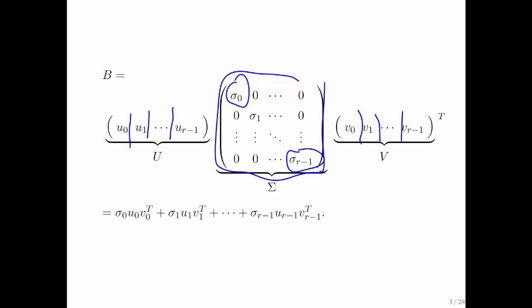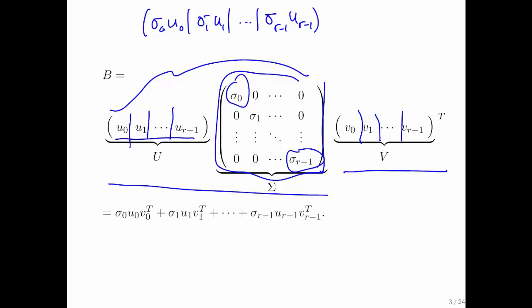In week four or five, we learned that if you multiply a matrix partitioned by columns times a diagonal matrix, then all you had to do was scale the individual columns. In other words, this right here is the matrix sigma 0 U 0 for the first column, sigma 1 U 1 for the second column, and so forth all the way up to r minus 1. This matrix right here is just a matrix V 0 transpose, V 1 transpose through V r minus 1 transpose.